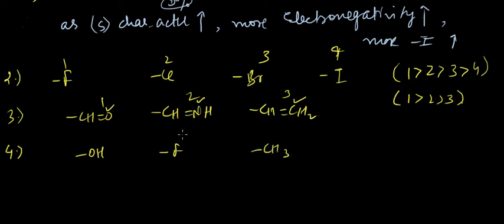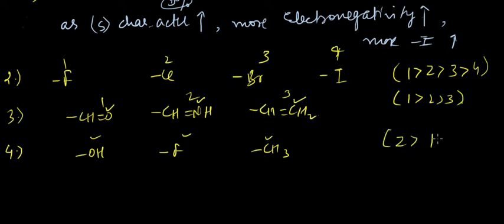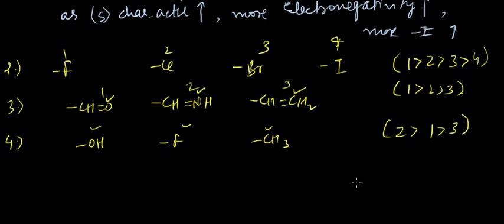Since F is more electronegative than O, which is in turn more electronegative than C, the order for minus-I effect would be: two greater than one greater than three.